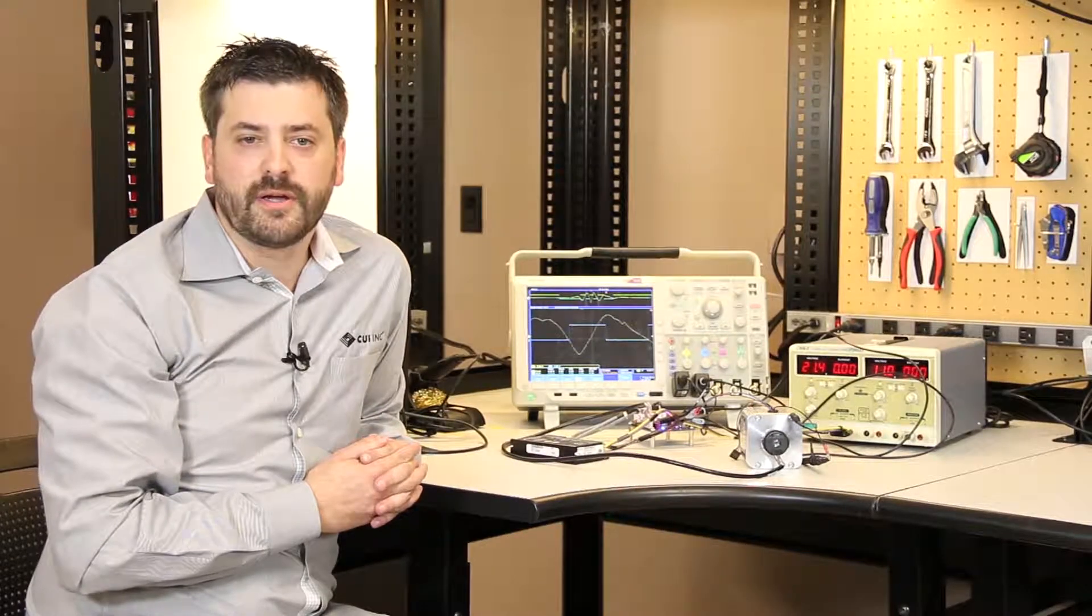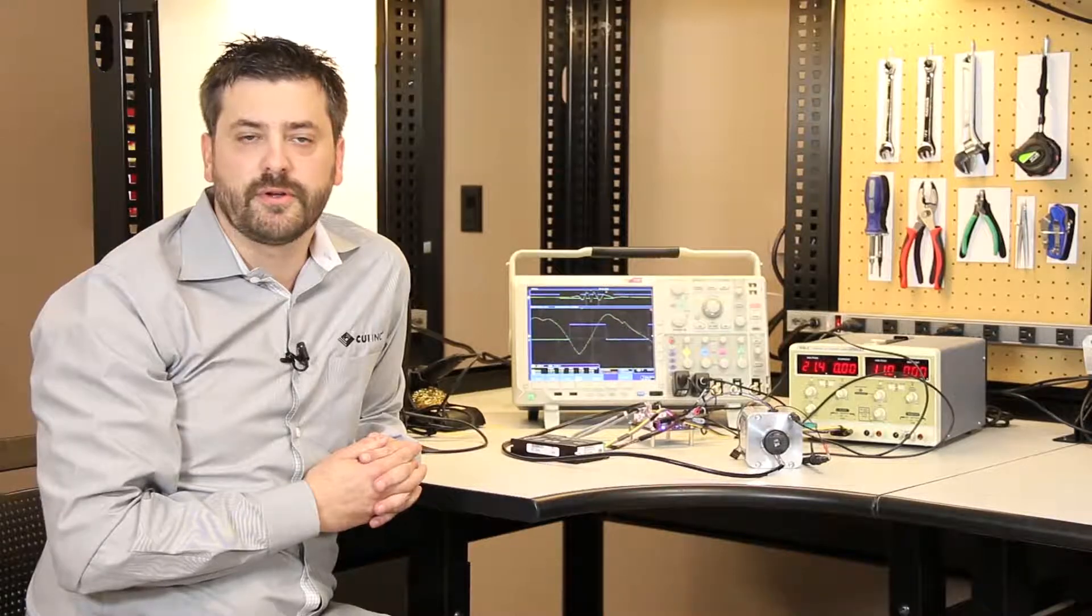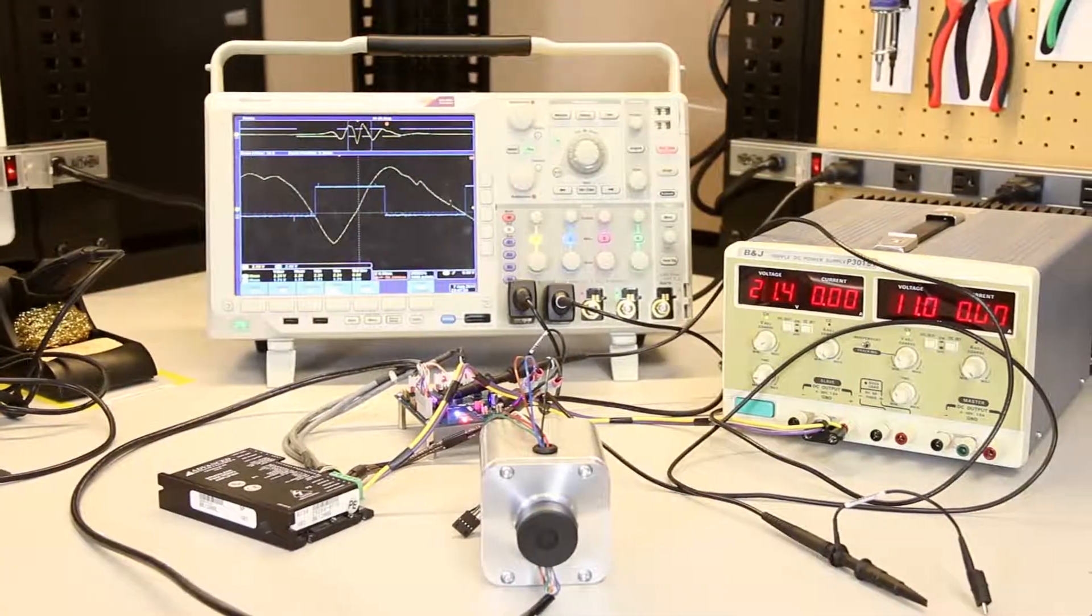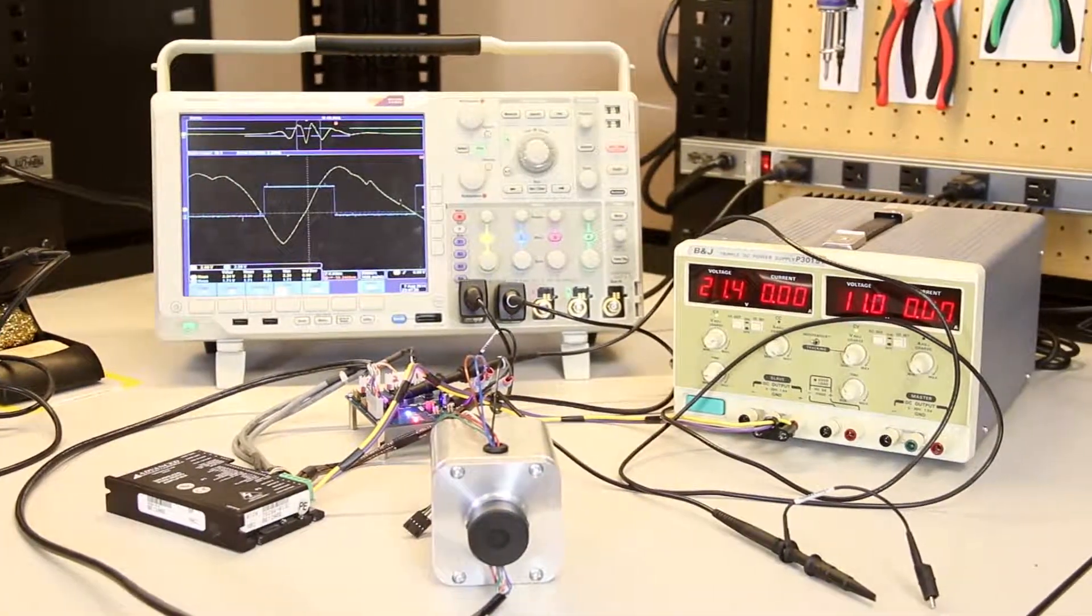In this video we will compare and contrast the process of aligning an optical encoder with the fast and simple process of aligning the AMT31 series commutation encoder.